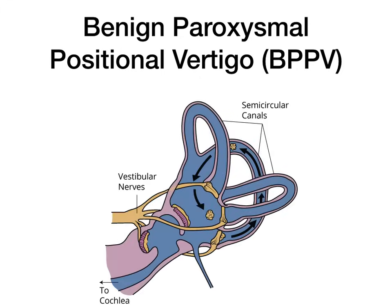Now let's talk about the pathophysiology. In the inner ear, there are three large loops called the semicircular canals. Normally, fluid flows through these canals, and the lining of the canals has tiny hairs. As fluid flows through the loops, the hairs move and transmit signals to the brain telling you where you are in space — it's a remarkable anatomy.